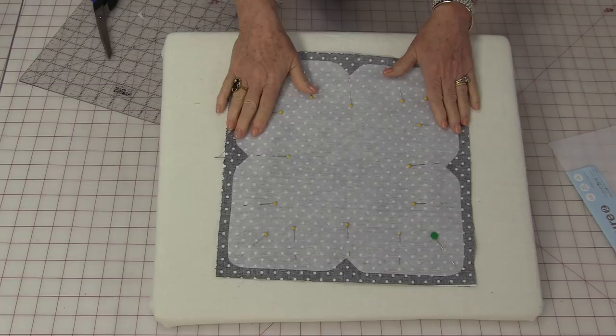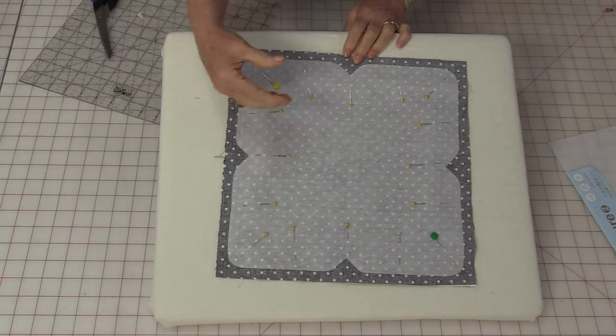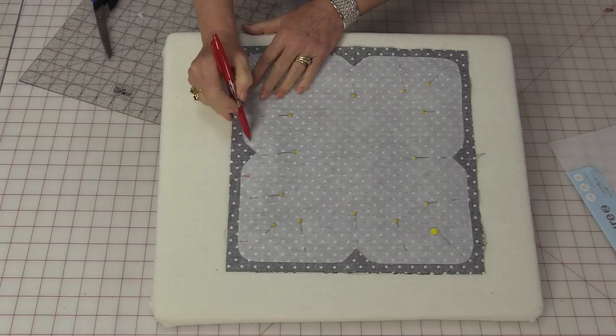You're going to use that interfacing as a guide and stitch all the way around. You're not stitching on the interfacing, you're stitching on the fabric but right along that edge. You do need to leave an opening in one area. Just mark that area so that you have somewhere to turn this right side out. Backstitch and stitch all the way around.